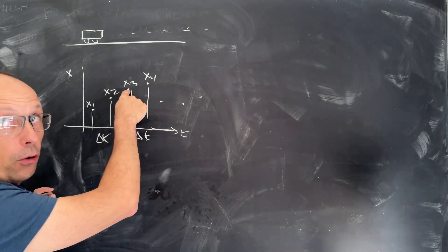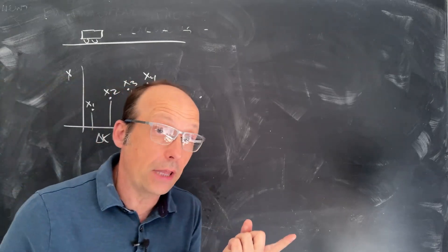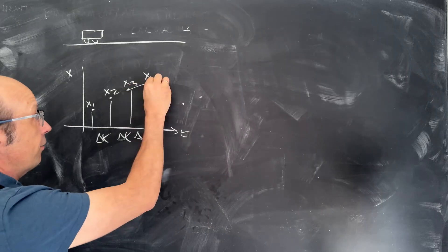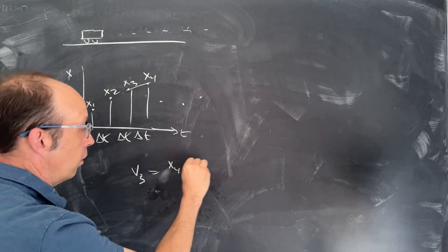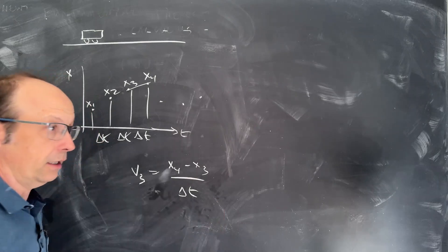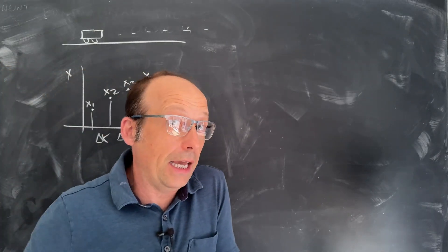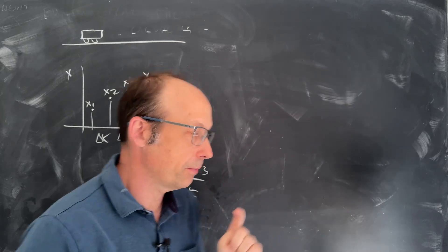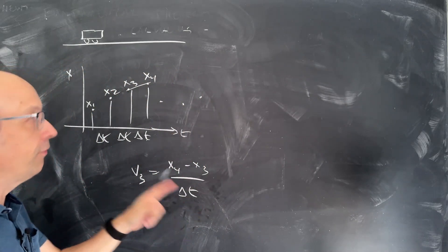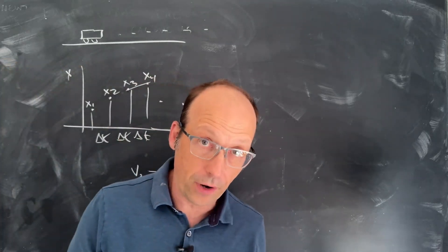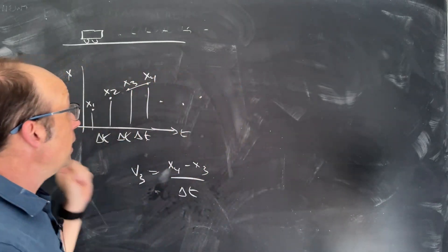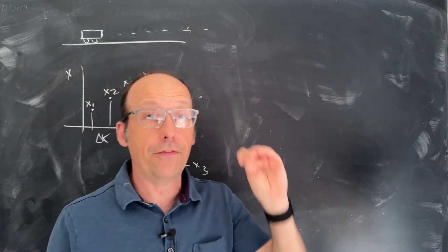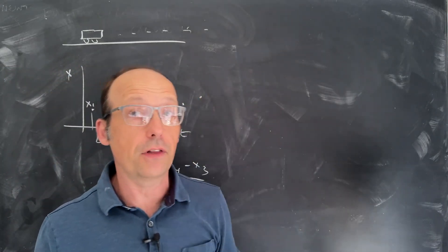If I want to find the slope at x3, one way is to say I'll call that v3 — it's just the slope right here. The slope is going to be x4 minus x3 over delta t. That's how we get the velocity. That's called a forward derivative because we're looking forward in time. Let's go ahead and do this numerically in Python. I'm going to make a graph of position versus time and from that calculate the velocity versus time.